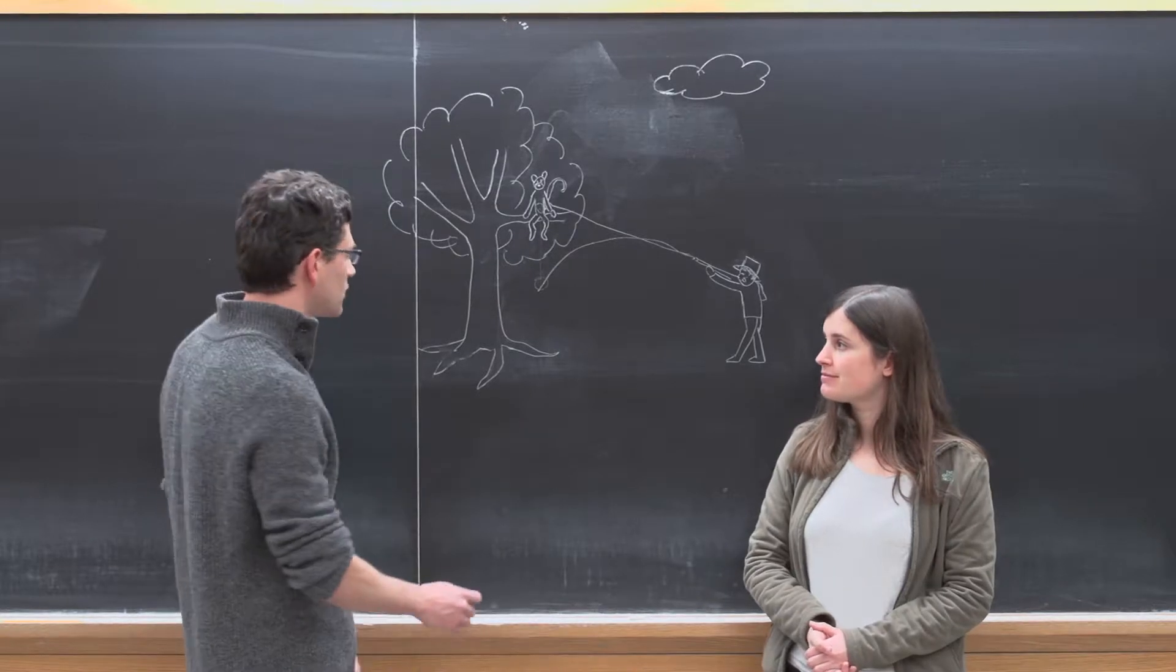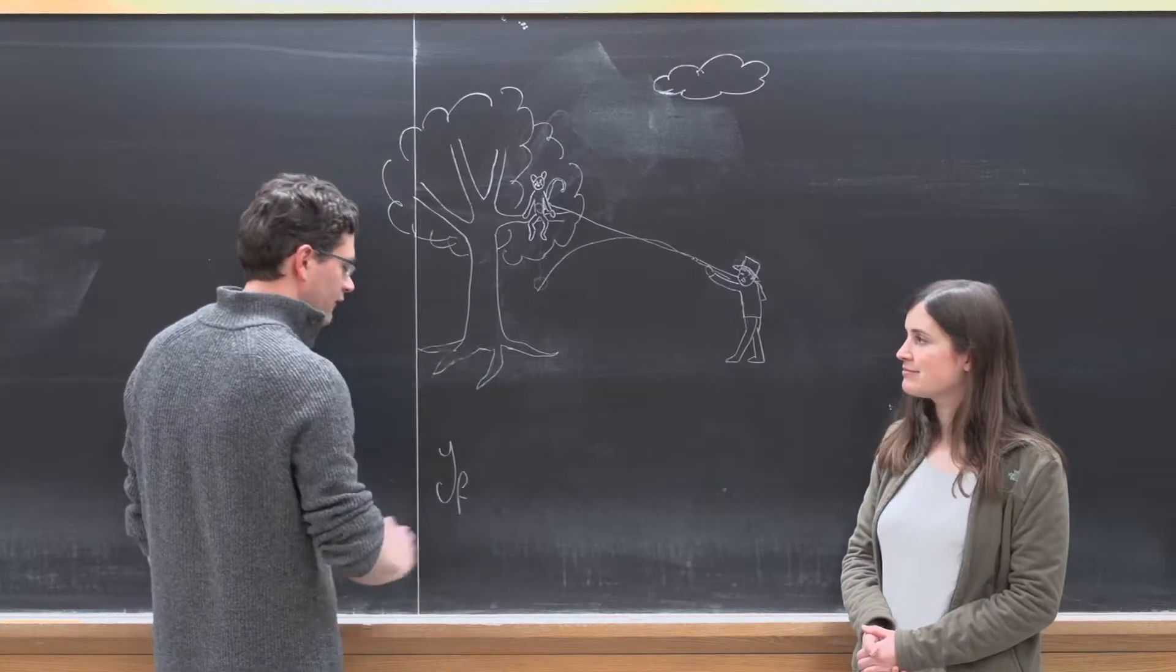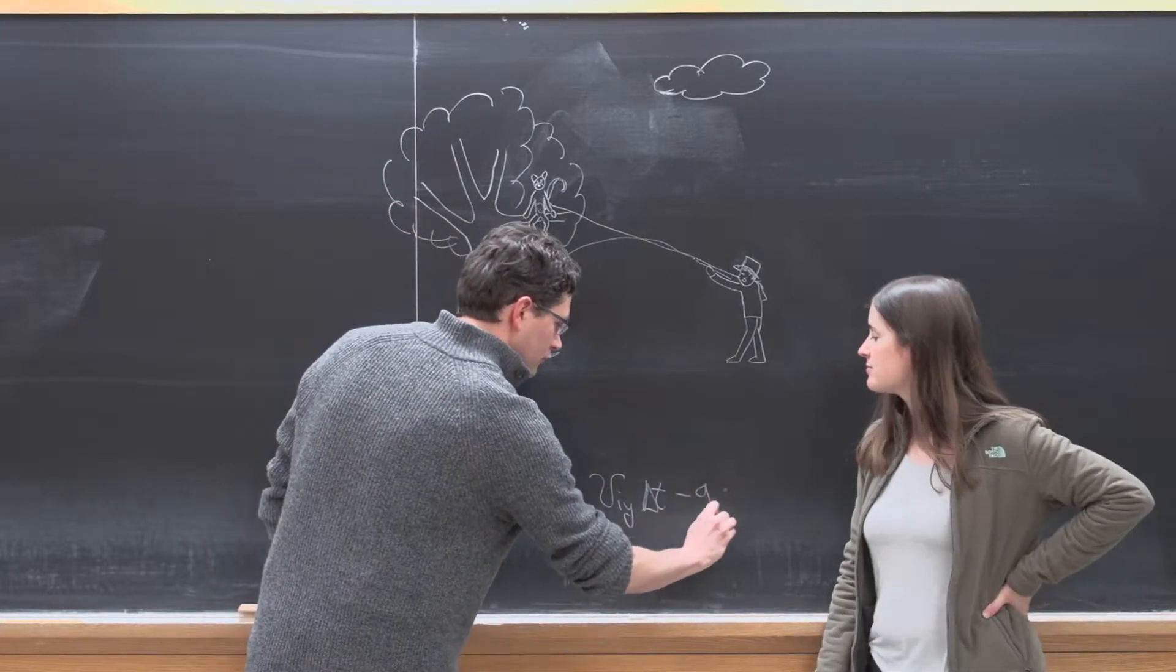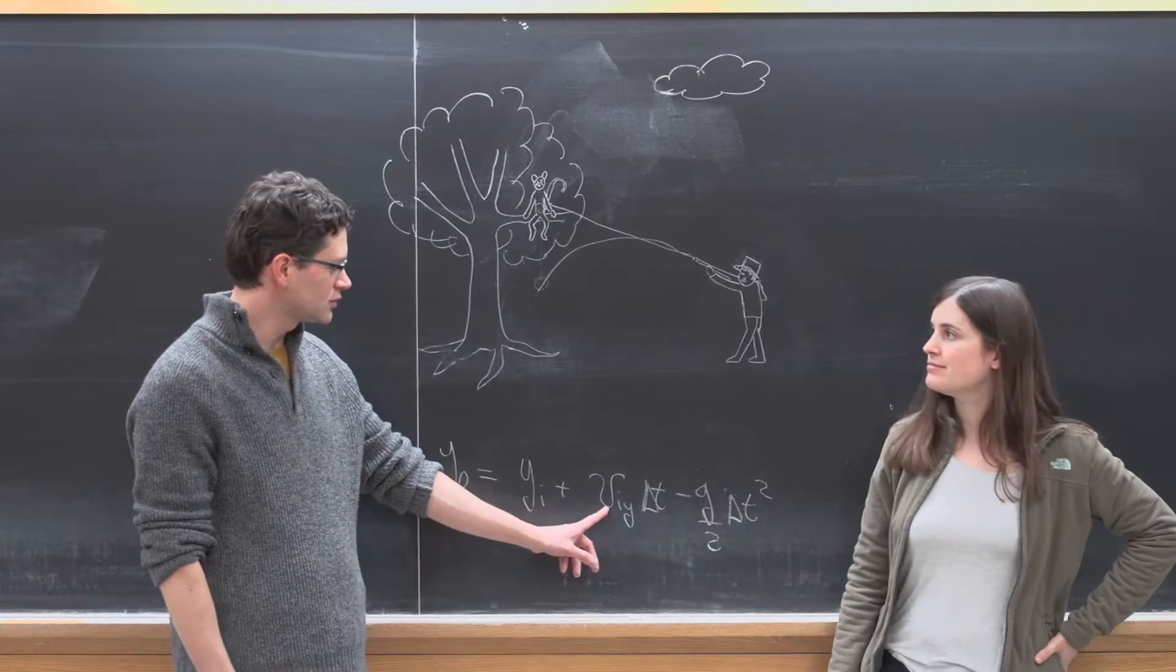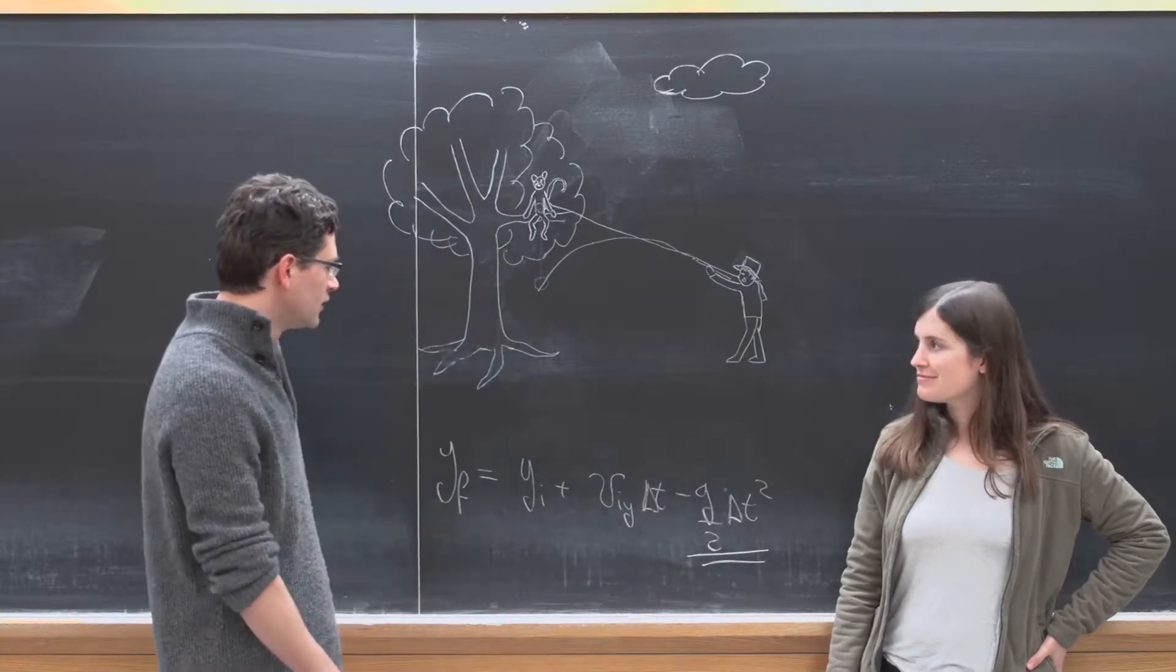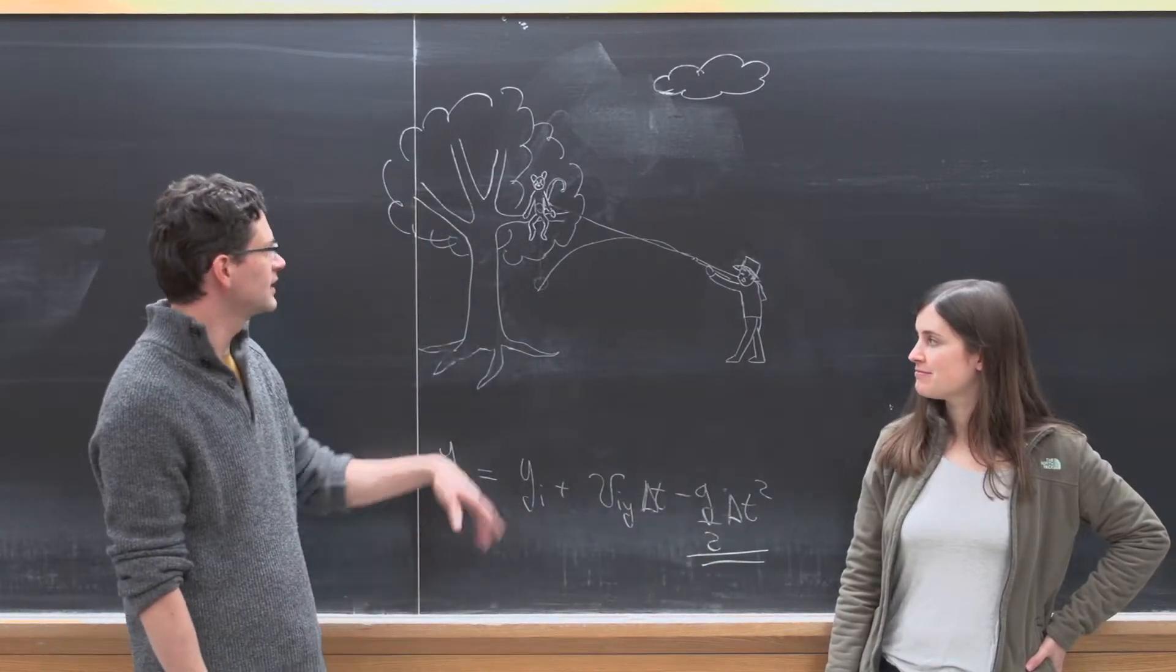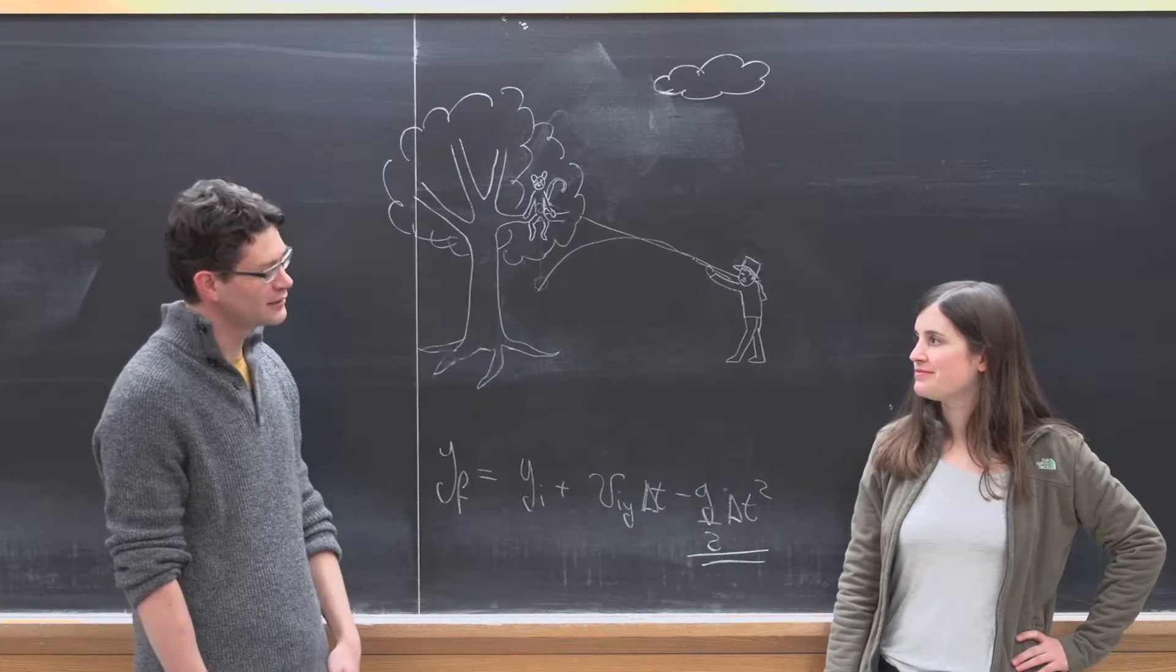You can see this from the equation. Let me try to write the equation. I'm going to write y final equals y initial plus viy delta t minus g over 2 times delta t square. That's the piece that's coming from gravity. So if there's no gravity, it's just essentially going in a straight line, but if there's gravity, it's going to fall like this amount. And I guess you're saying the monkey's also going to fall by this amount. Exactly. It's a free fall. So even if you look at the monkey, it's falling by exactly the same amount in the same amount of time.